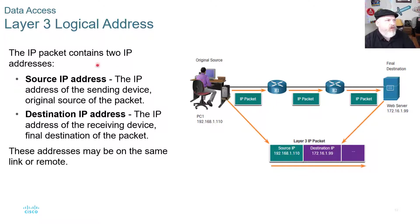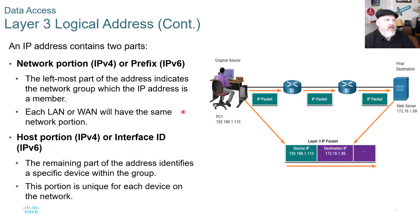Layer three logical addresses: the IP packet contains two IP addresses, the source and the destination. The source IP address is where it's coming from, and the destination is where it's going to. These addresses may be on the same link or remote. An IP address contains two parts: a network portion (IPv4 prefix or IPv6 prefix) — the leftmost part indicating the network group — and a host portion, which identifies a specific device within the group and is unique for each device on the network.